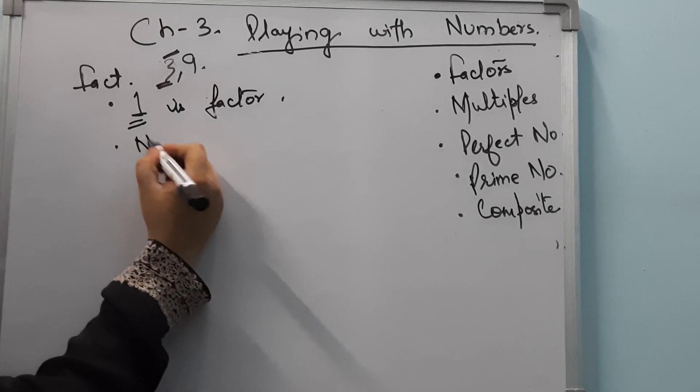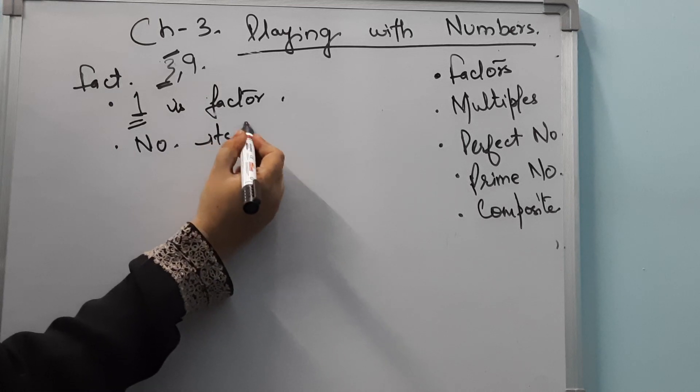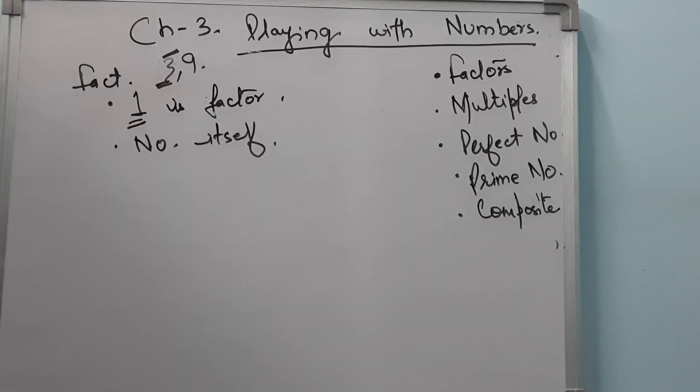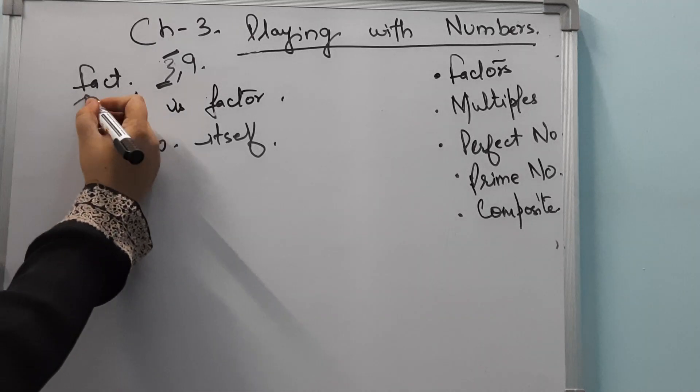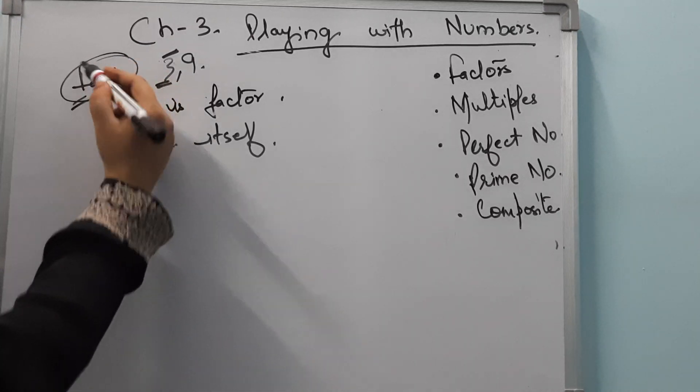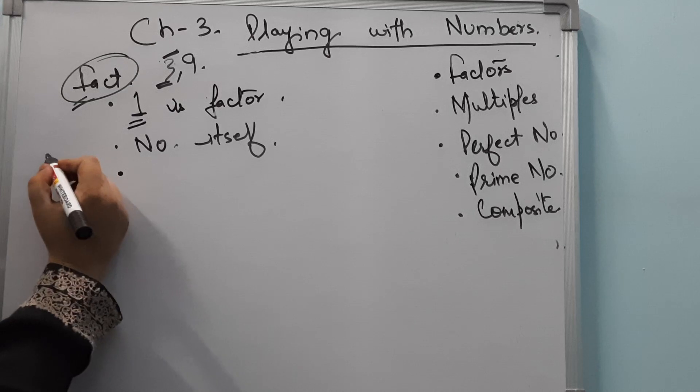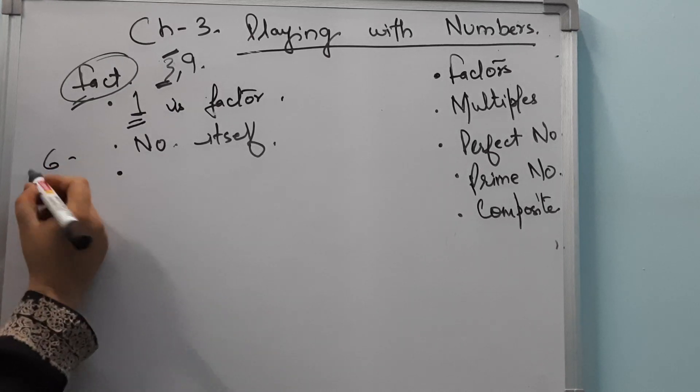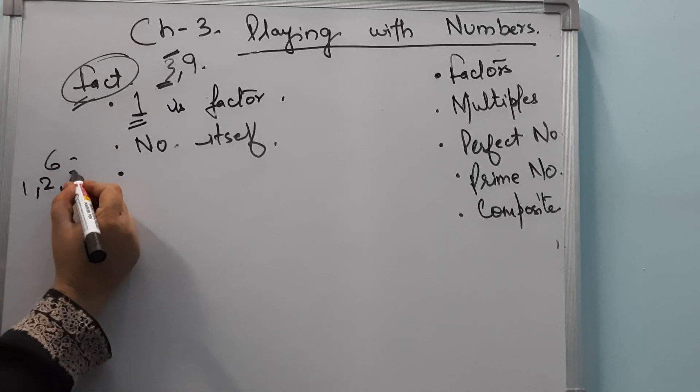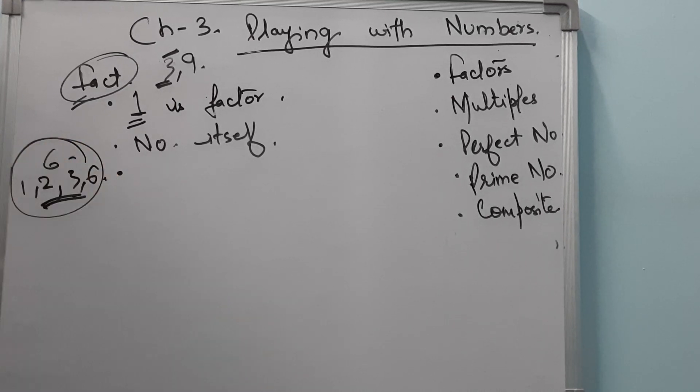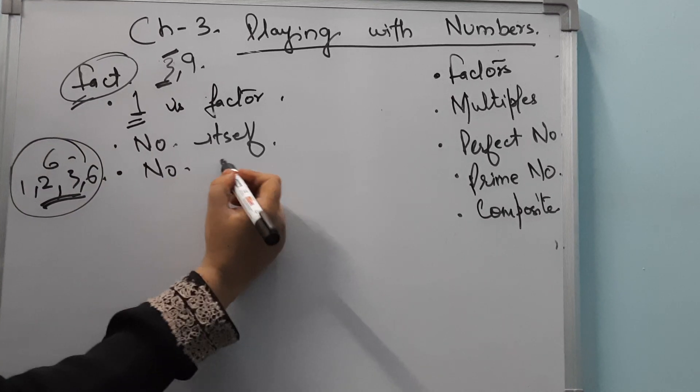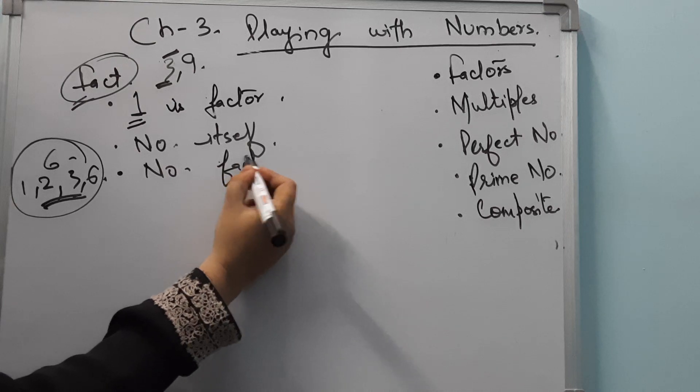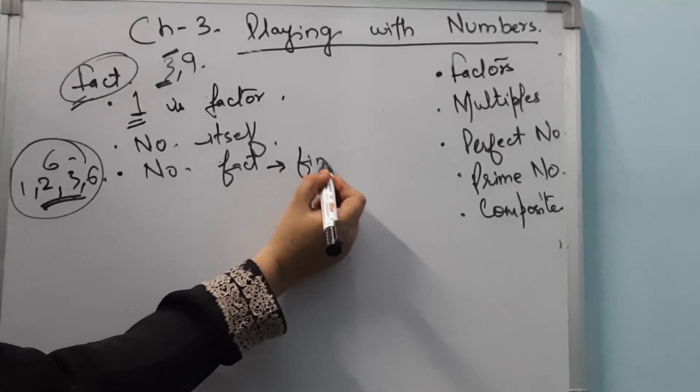Fact 2: Every number itself is its factor. Fact 3: The number of factors is fixed and finite. For example, if we take 6, the factors are 1, 2, 3, and 6. So it has 4 factors, which is finite and fixed.